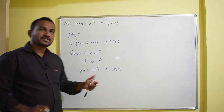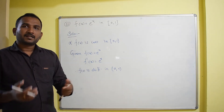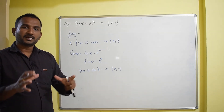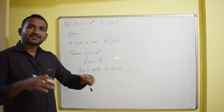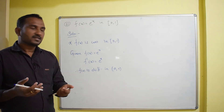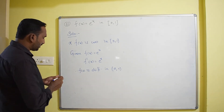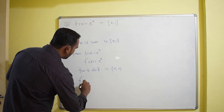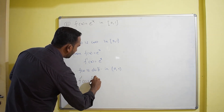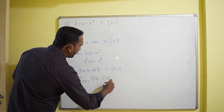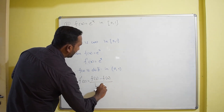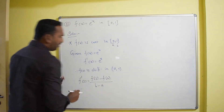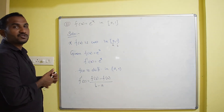Since both conditions are satisfied, there exists at least one value c in the open interval (0, 1) — or (a, b) in general — such that f'(c) = [f(b) − f(a)] / (b − a). Here a = 0 and b = 1.